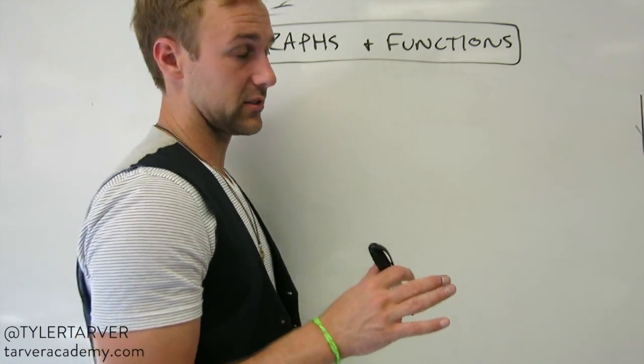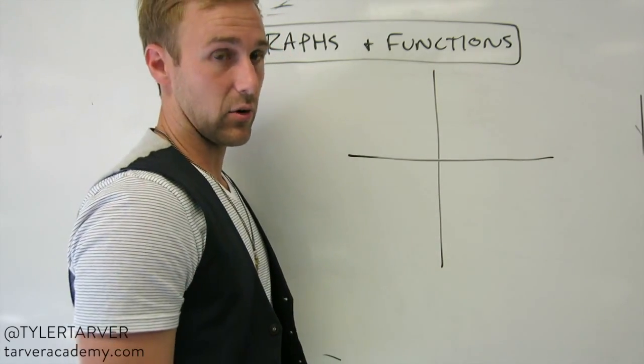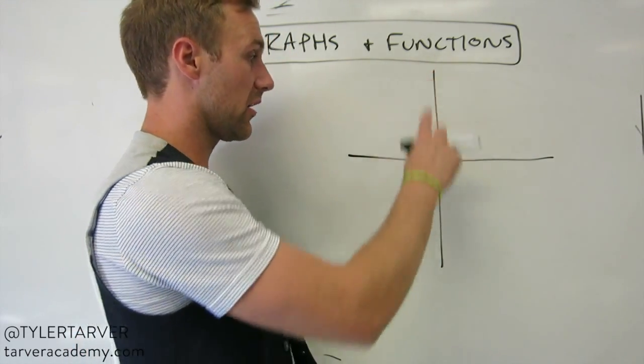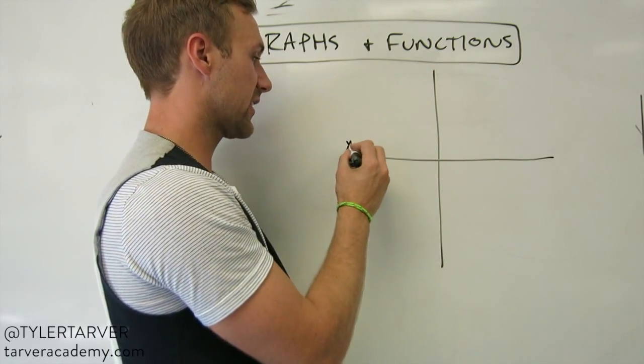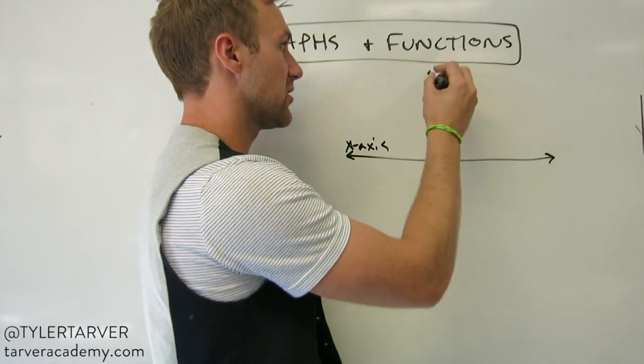I want to talk about a coordinate system. A coordinate system is what you see that looks like this. It's comprised of primarily two lines. This is your x-axis. It's the line that goes side to side. And this is your y-axis.